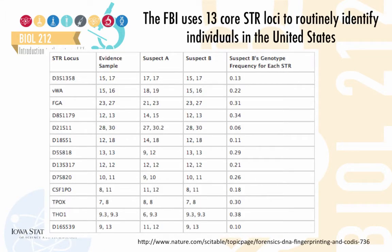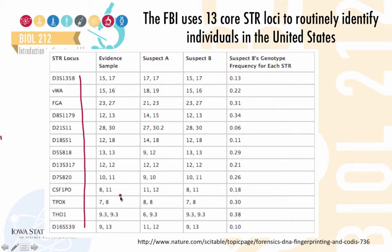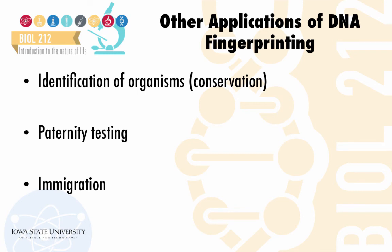The FBI uses 13 core STR loci to routinely identify individuals within the United States. Here is a list of those 13 loci, along with an example of a case where these loci are matched against suspects involved in a crime with the evidence sample. As you can see, the pattern for these 13 core STR loci matches between the evidence sample and suspect B. Other applications of DNA fingerprinting include the identification of organisms for conservation purposes, paternity testing, and immigration purposes.